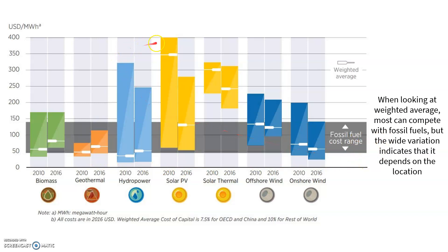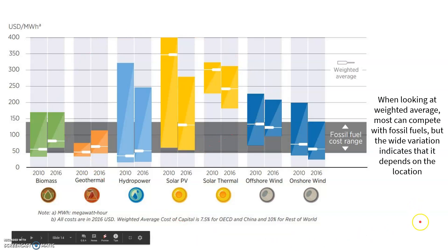That said, not always. We see solar power has a lot of variation, although the weighted average has come down a lot and continues to decrease as we get better technology. There are some things that are increasing in cost marginally — like hydropower — which may be becoming more expensive because all the major rivers have been dammed. It's more expensive to build a hydropower plant because there are only so many places we can put a dam.